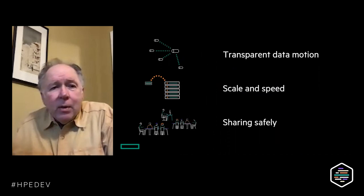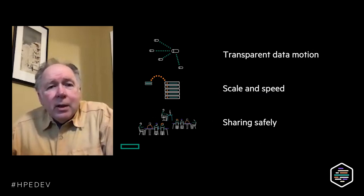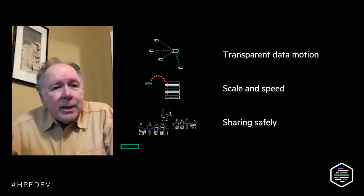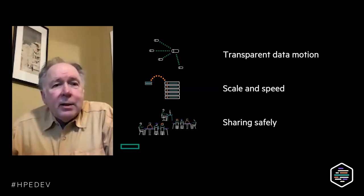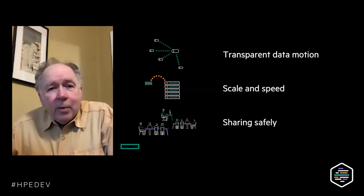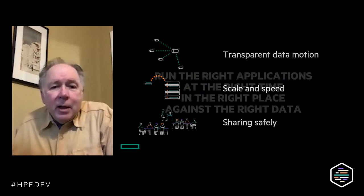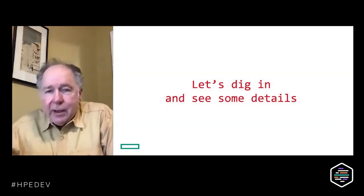So here we go — we've got three key properties to talk about in terms of how it actually works: the planet-spanning geographical scale, the byte-size scale (petabytes per second that you can read), and the ability to share safely. The data fabric makes all that happen, but let's dig in.